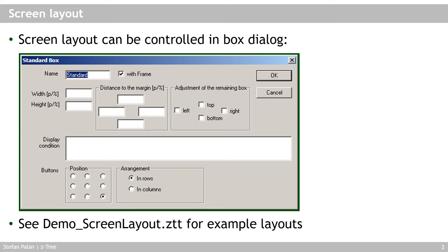For example, if in the top field you enter 100p, that means the box starts 100 pixels below the top of the screen. You can also specify this in percent — say 10% below the top. These two fields may conflict: if you specify a width of 50% but a distance to the margin of 60%, that doesn't work, because the box needs 50% width but only 40% of screen space remains. Make sure you program these without conflict.